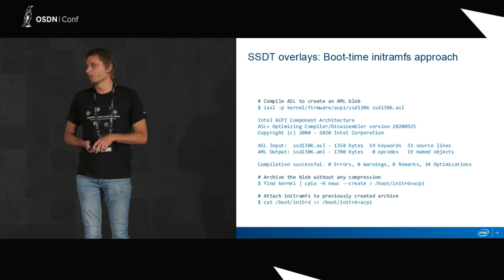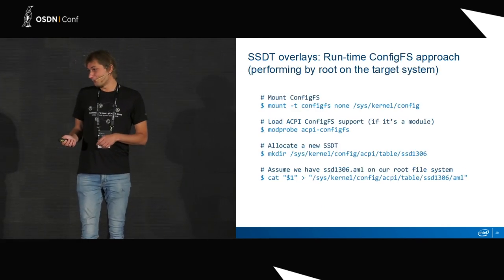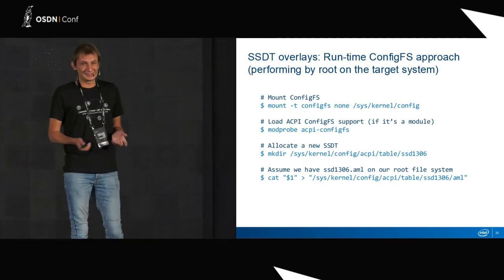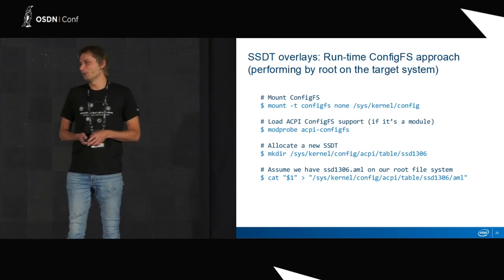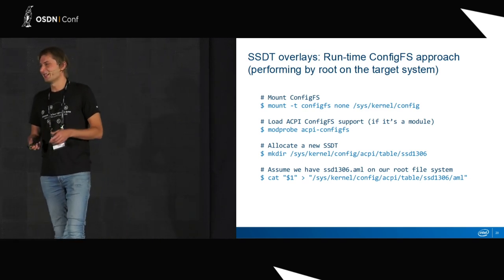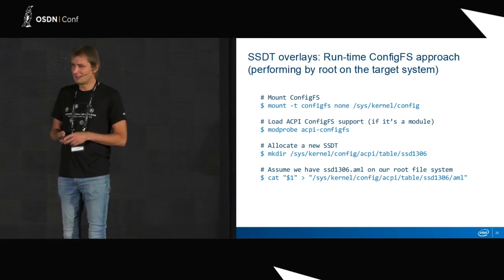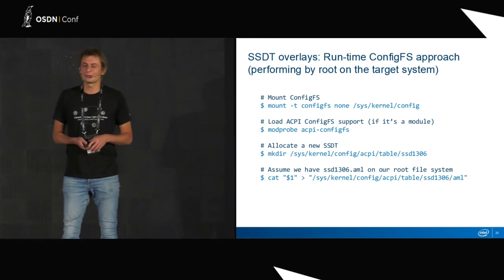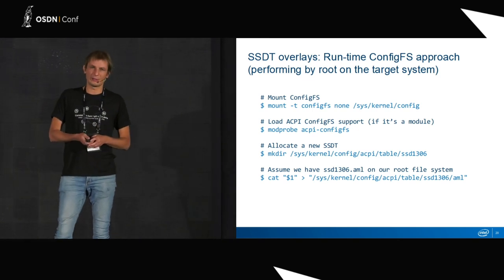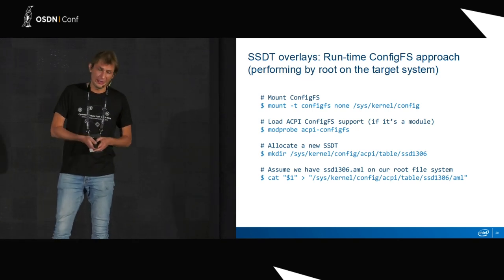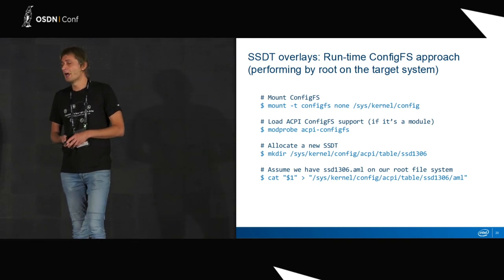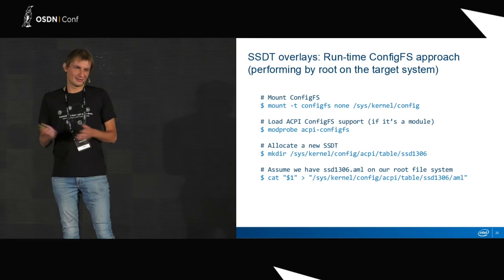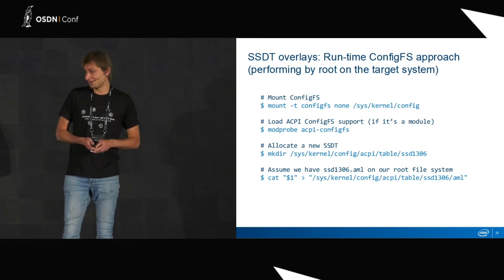Almost the same approach for the configfs method. You compile it, but instead you do it at runtime — mounting configfs, loading the special ACPI configfs module (or it loads automatically if compiled in), then you create a directory and cat the AML to a special file there, and that's it.